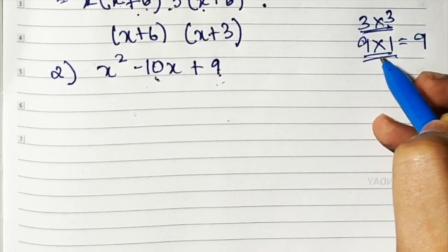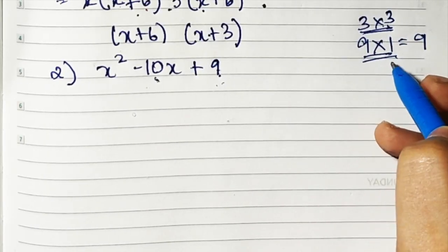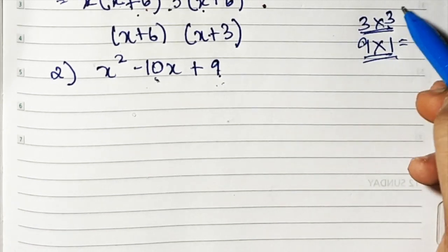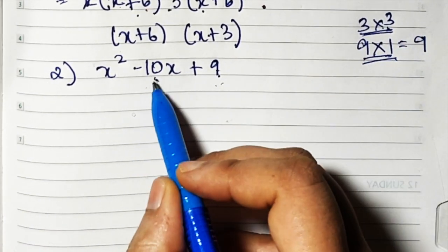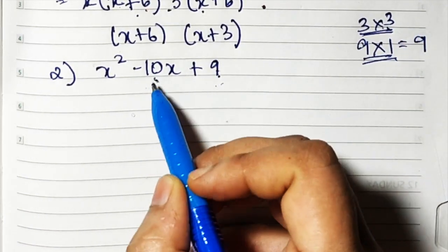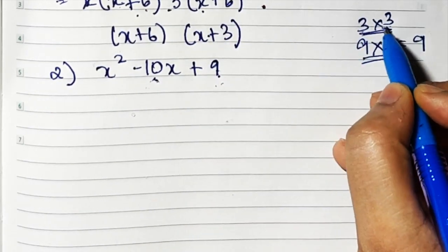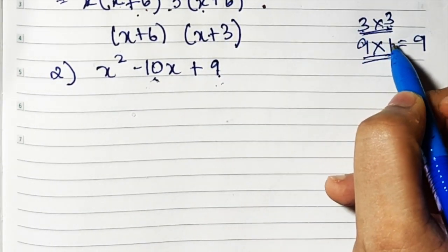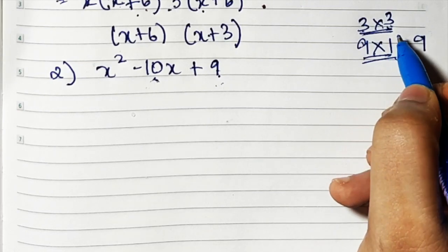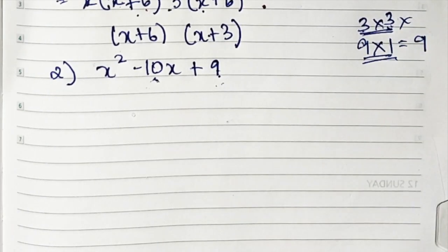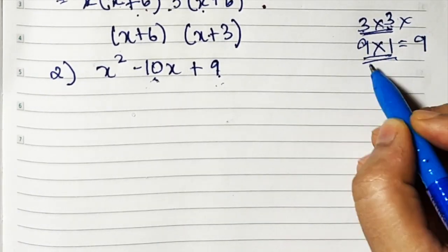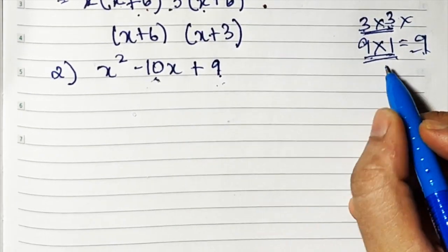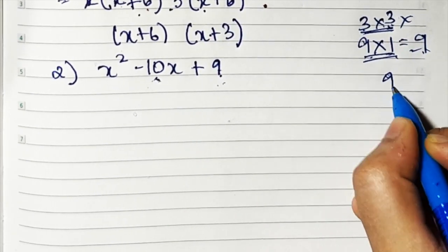We have two pairs: 3 threes are 9 and 9 ones are 9. I have to take any one so that when I add or subtract, I get 10. If I take 3 and 3 and add them, I get 6. If I subtract, I get 0. So I cannot take this combination. Now 9 plus 1 is 10, so I think this will work. So we'll take 9 and 1.